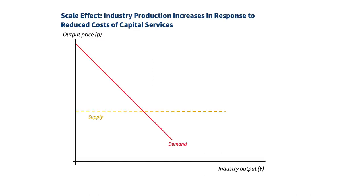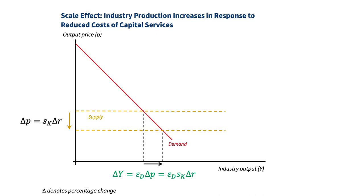We can look at the scale effect in a simple supply and demand diagram. If the services of capital get cheaper — such as tractors replacing horses — then food gets cheaper. The exact amount is the product of how much cheaper capital is and the share of capital in total factor costs. When food is cheaper, consumers buy more and farmers produce more. The additional amount is the product of the price change and the price elasticity of the demand for food. So that's the formula for the scale effect. Remember that epsilon d is negative because demand slopes down.